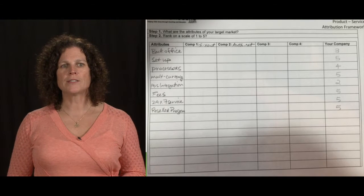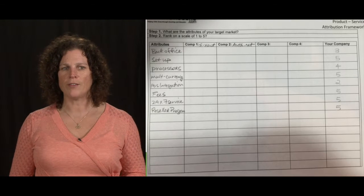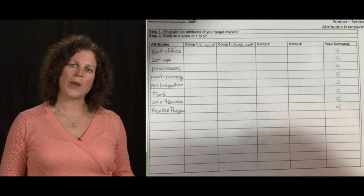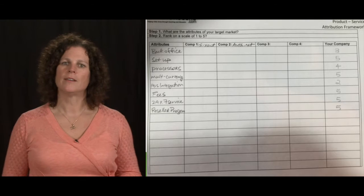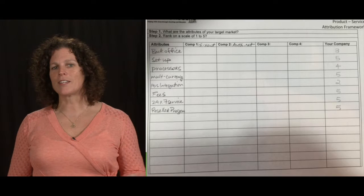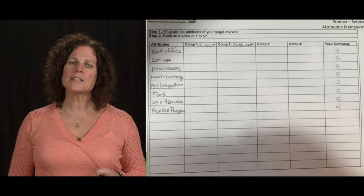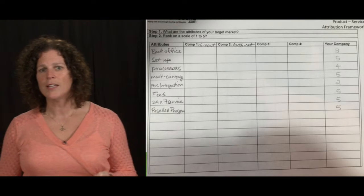The next thing I want you to do is rate your organization on a scale of one to five, five being the best, one being the worst, on how you're doing. I just want to caution you: you can't be a five at everything, and you can be a one at everything. That'll give you some good ideas on what you might want to do differently.